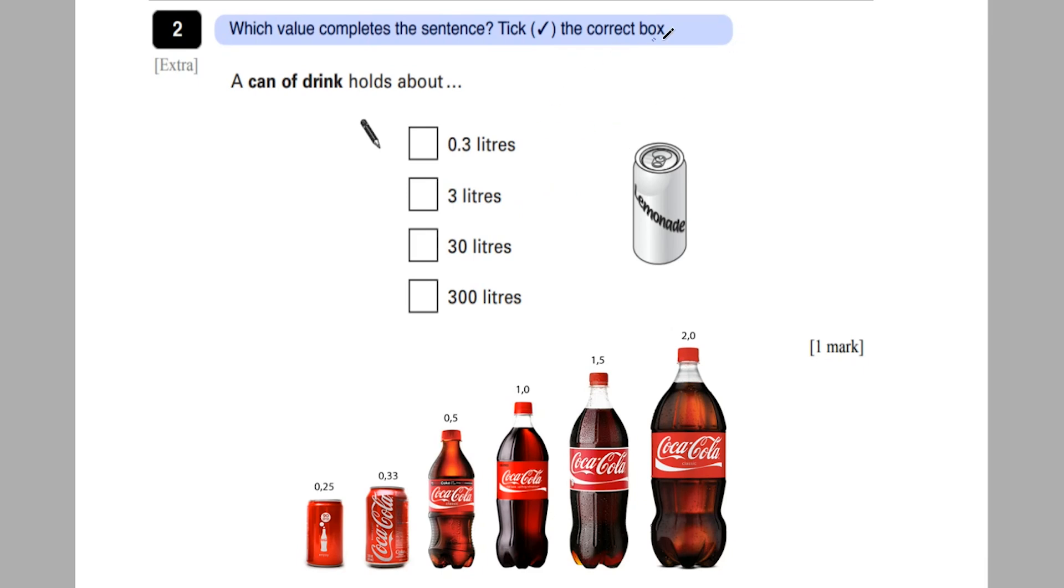Let's look at another question. It says, which value completes the sentence? Tick the correct box. A can of drink holds, and we've got to tick one of these. So 0.3 litres. Now the key information I need is that there are a thousand millilitres in one litre. So that means that half a litre is 0.5 or 500 millilitres.